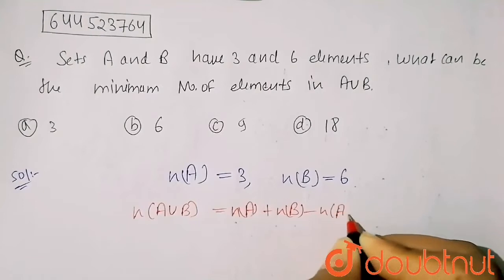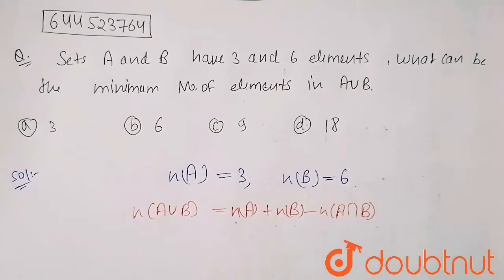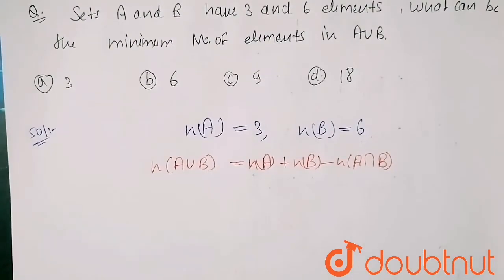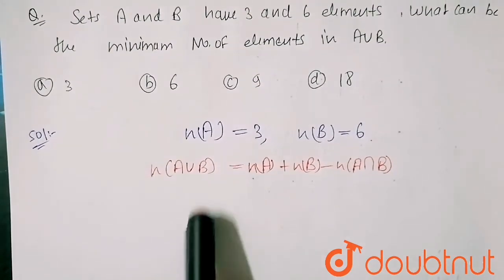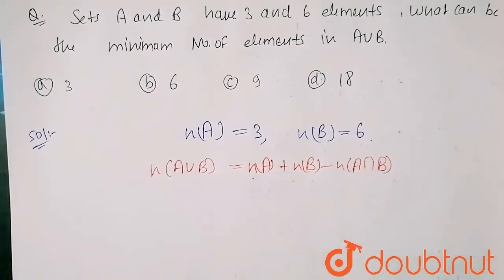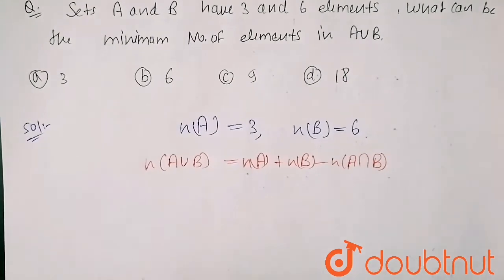And my minimum number of elements in this will depend on this part, A intersection B. So when my n(A∩B)...